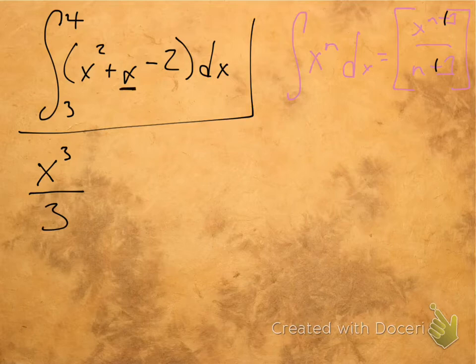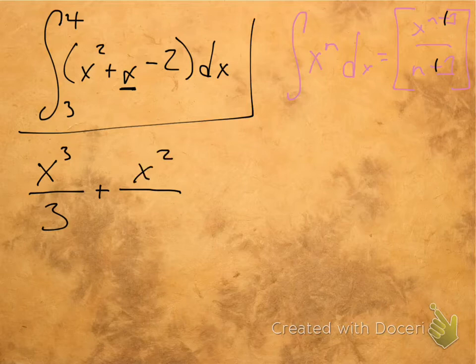Then we have this x here. Well, what is x? x is just x to the first power, right? So we still have this rule of x to the n plus 1. So we're going to end up with x squared 1 plus 1 over 1 plus 1, which is, you know, n plus 1, which is going to be 2.